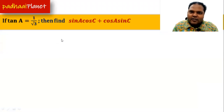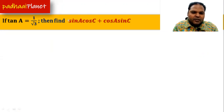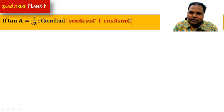Here is the question: if tan(A) is equal to 1 over √3, then we need to find out the value of the expression sin(A)cos(C) + cos(A)sin(C). This is what we need to find out.